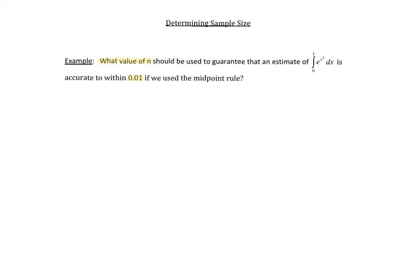This 0.01 is the error bound that we're trying to be within. We're trying to determine what the sample size n is. It's important that we're using the midpoint rule because that tells us which error bound formula to use. The formula is E sub m, and that error is bounded by k times (b minus a) cubed divided by 24n squared.